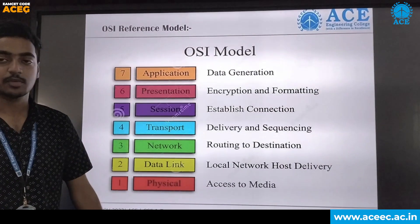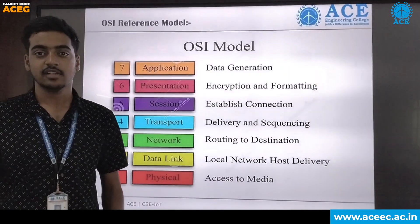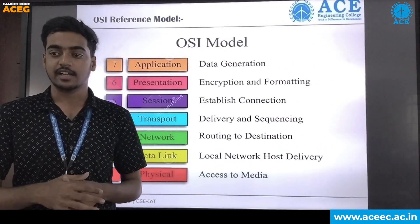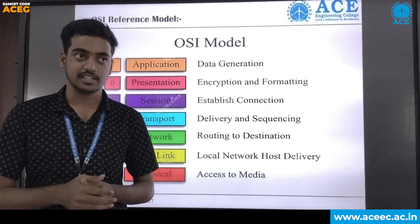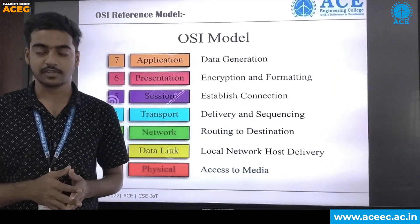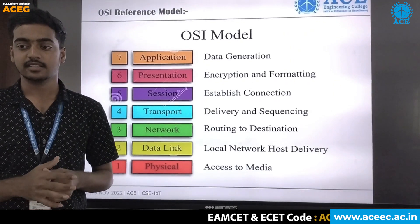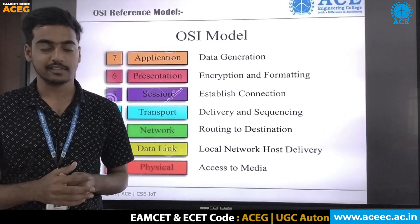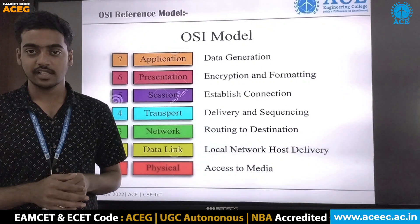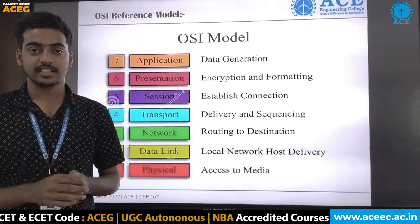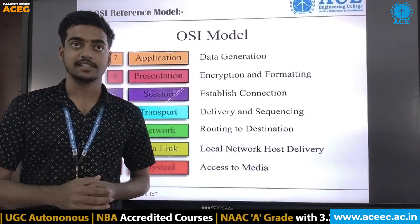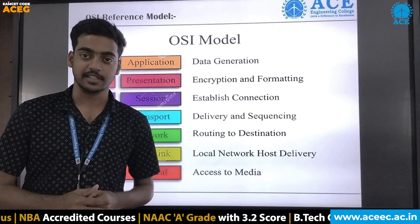To wrap up the OSI model: the application layer is used for data generation; the presentation layer for encryption and formatting; the session layer for establishing connections; the transport layer for delivery and sequencing; the network layer for routing to destination; the data link layer for local network host delivery; and the physical layer for accessing the media.